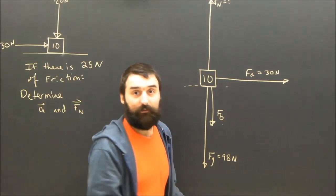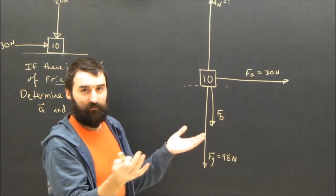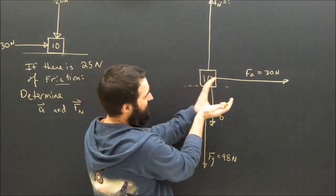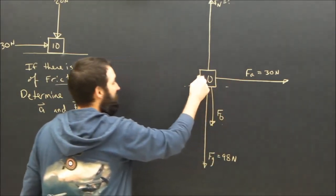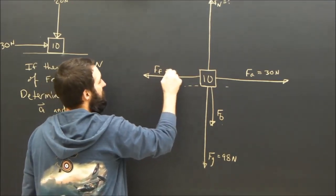Obviously, there's friction because it's 25 newtons. Which way is friction going to be? Not too hard. This thing is going to slide to the right if friction lets it. Friction will fight that, so friction will be to the left.